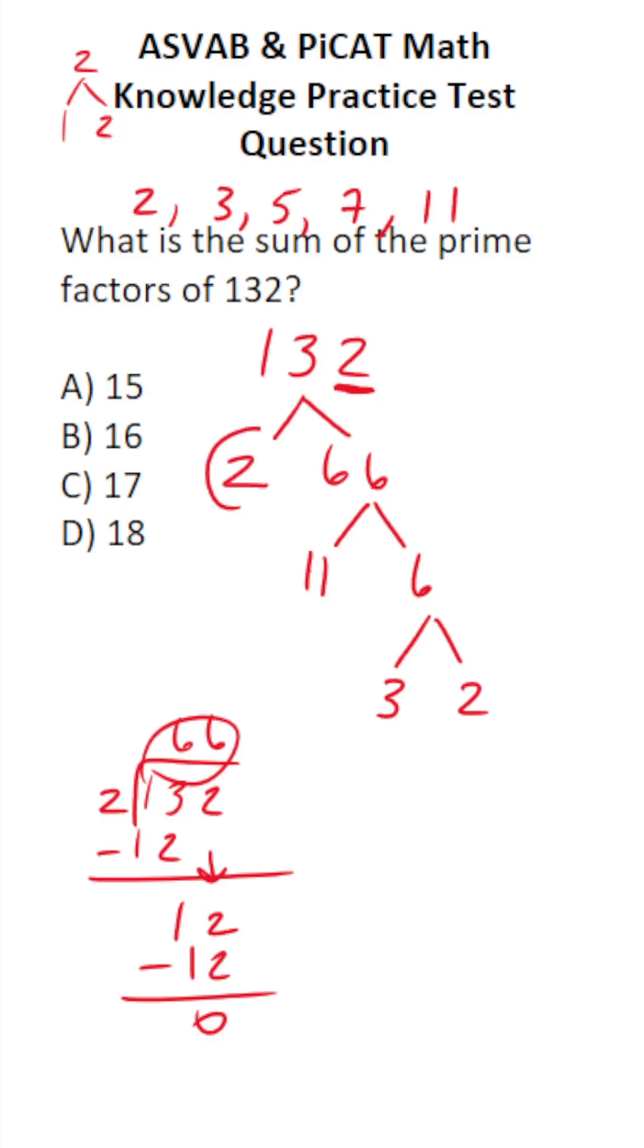What are our prime factors? 2, 11, 3, and 2. What is the sum of those prime factors? Well, that's going to be 11 plus 3 plus 2 plus 2.